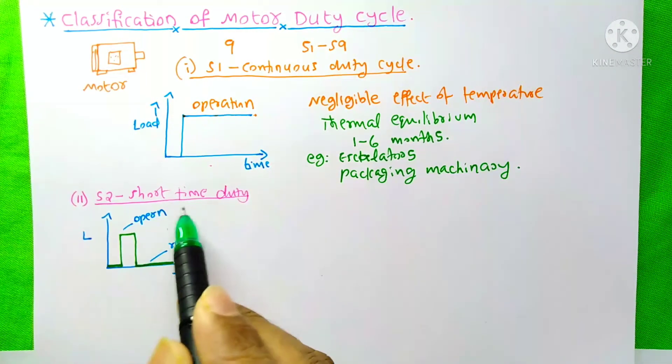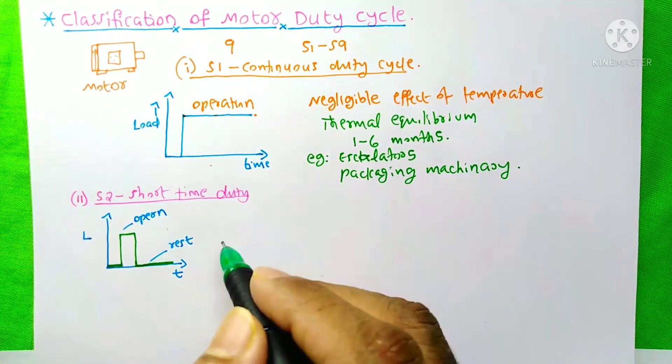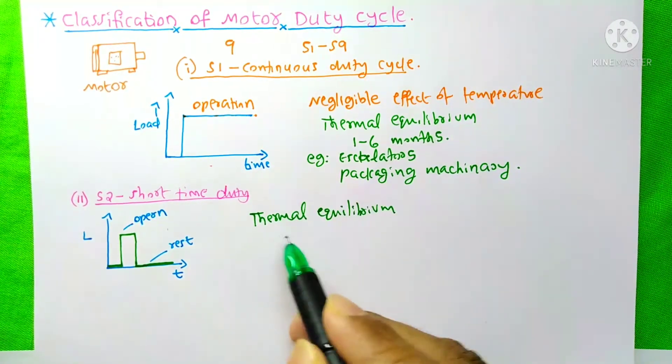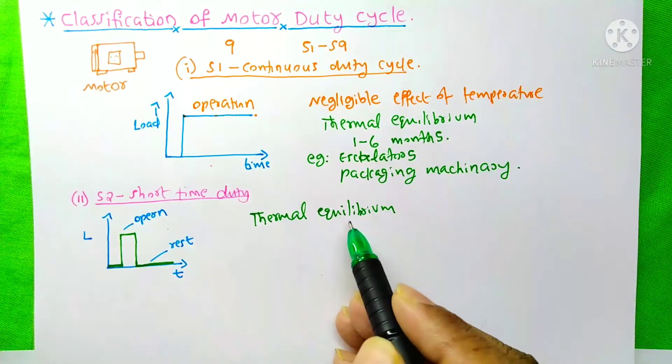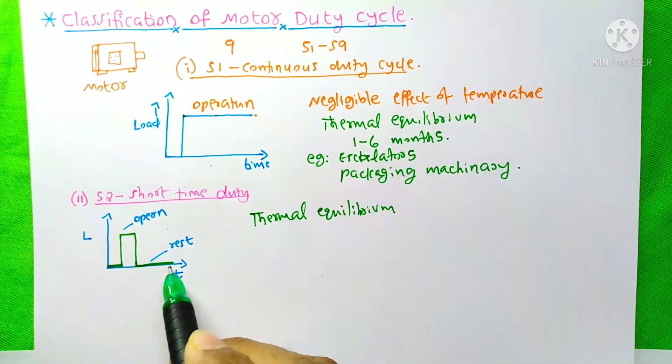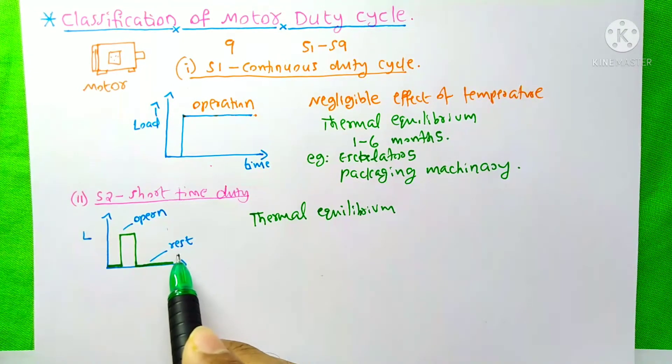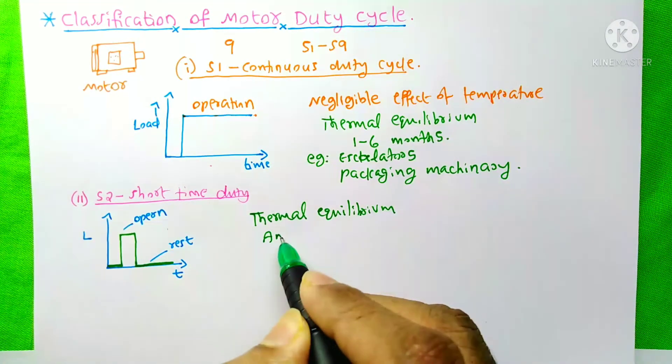It works for a short time. For a short time, this motor cannot reach thermal equilibrium state. Before reaching thermal equilibrium, it will be switched off. But due to the long rest time of this motor, it can reach ambient temperature state.